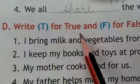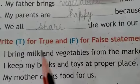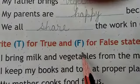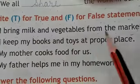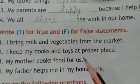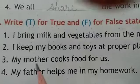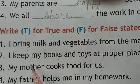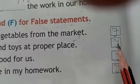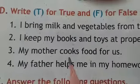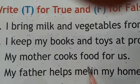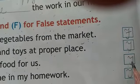Next: write T for true and F for false statements. Agar statement true hai to T, agar false hai to F likhenge. First: I bring milk and vegetables from the market — this is a false statement, kyunki father laate hain, so write F. Second: I keep my books and toys at proper place — true statement, write T. Third: my mother cooks food for us — true statement, so write T.